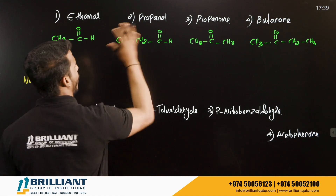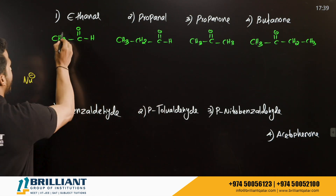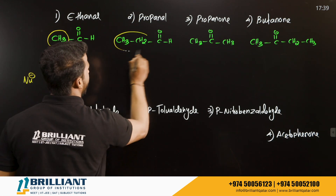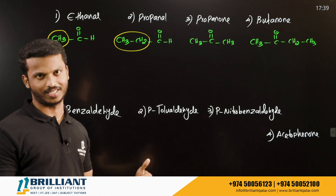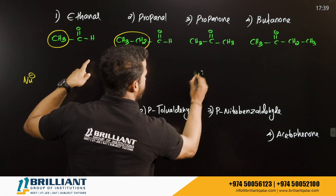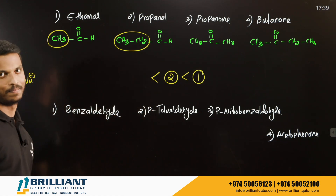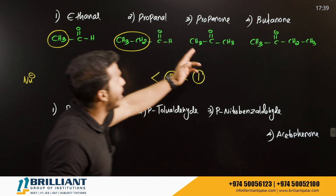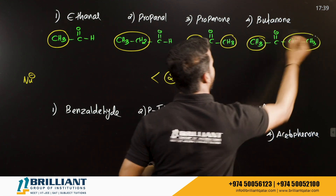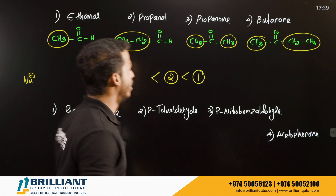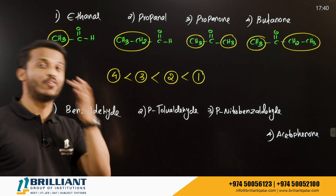Among the aldehydes: ethanal has a methyl group and propanal has an ethyl group on the carbonyl carbon. Ethyl is a stronger electron donating group than methyl, so propanal has a lower positive charge on the carbonyl carbon — making ethanal more reactive than propanal. Among the ketones: propanone has two methyl groups, butanone has one methyl and one ethyl — more donating power means less reactivity. So the increasing order of reactivity is: butanone < propanone < propanal < ethanal.